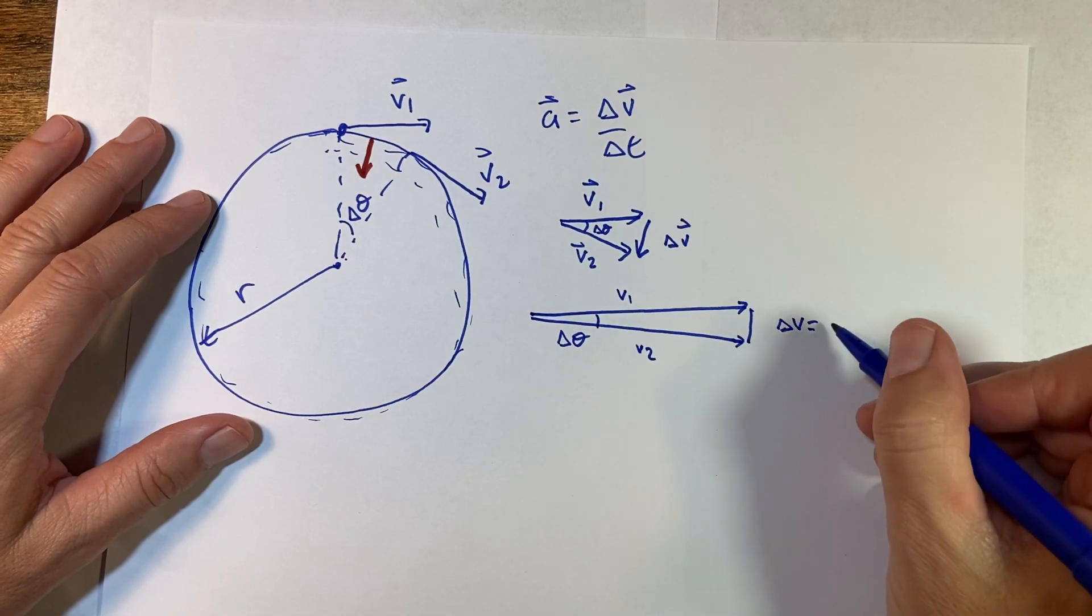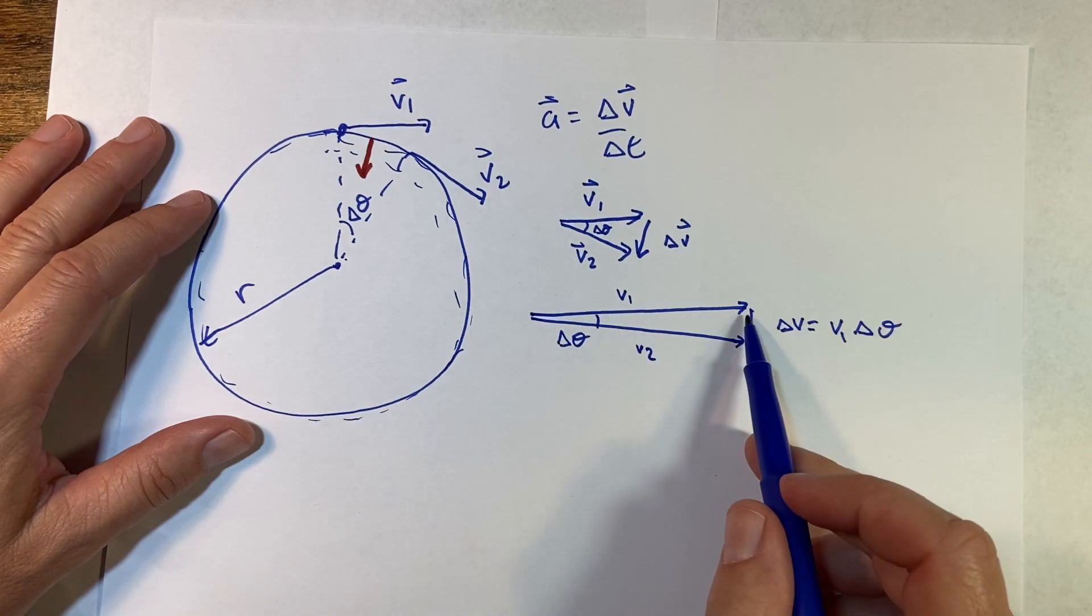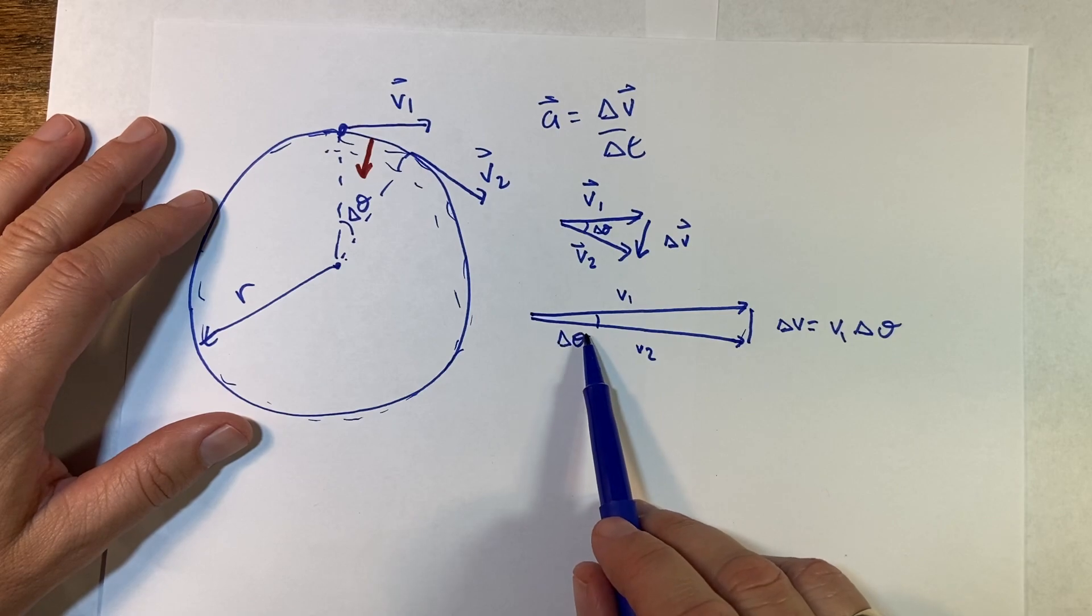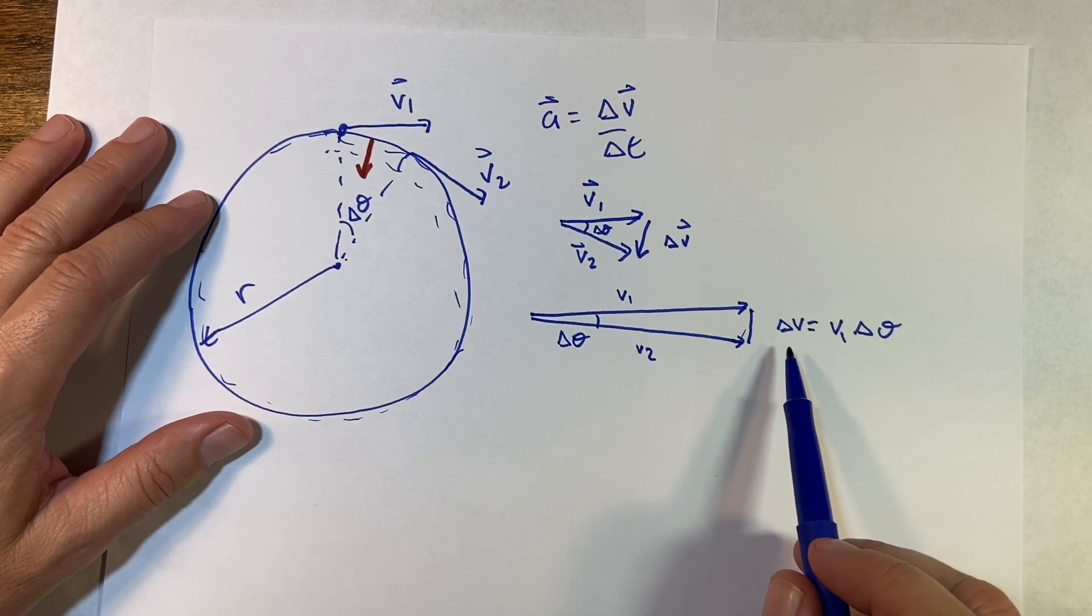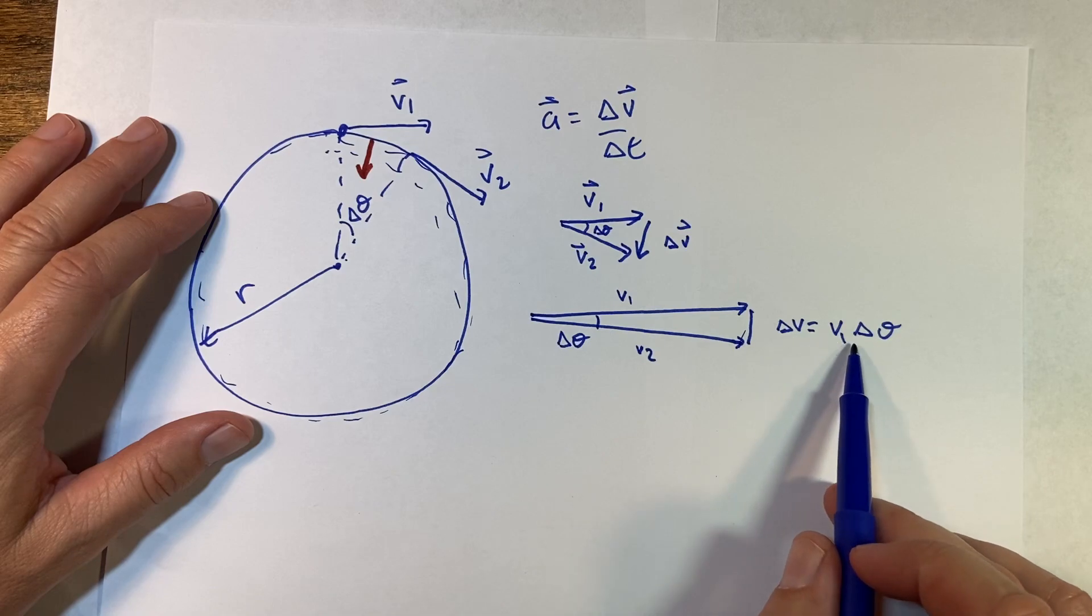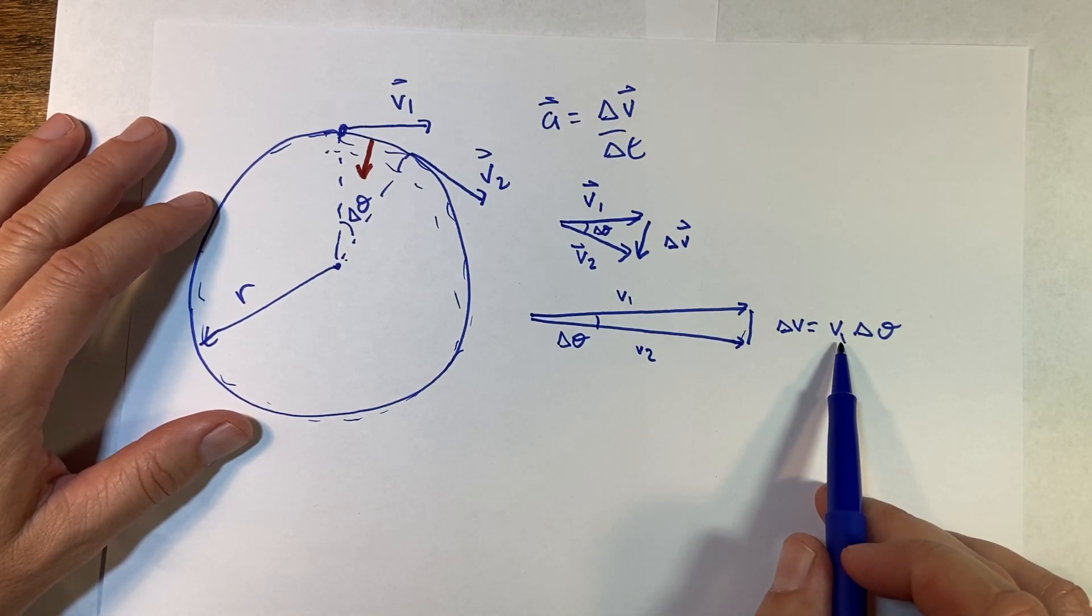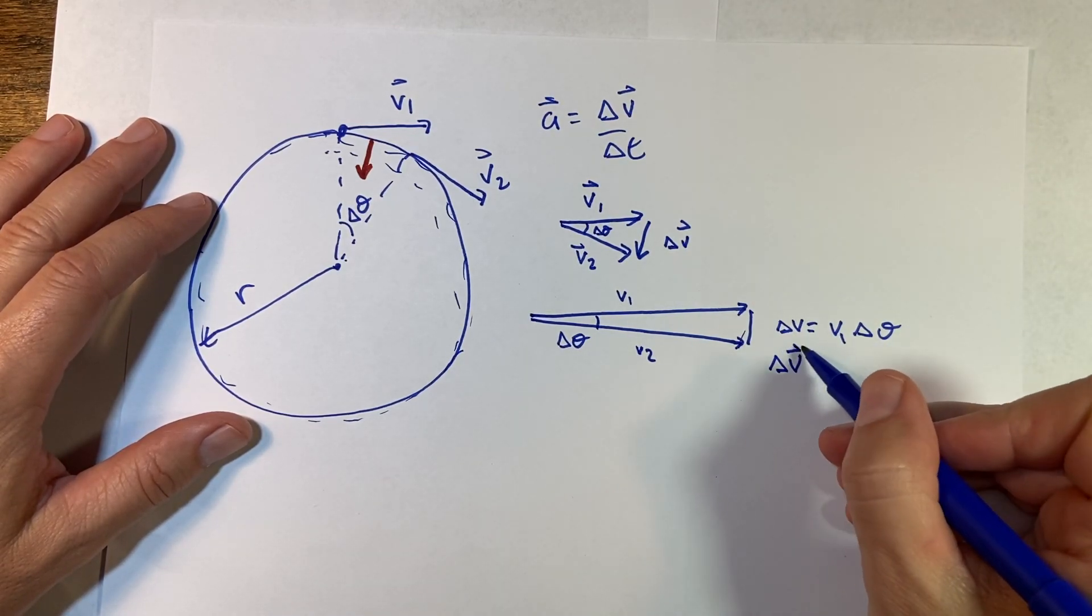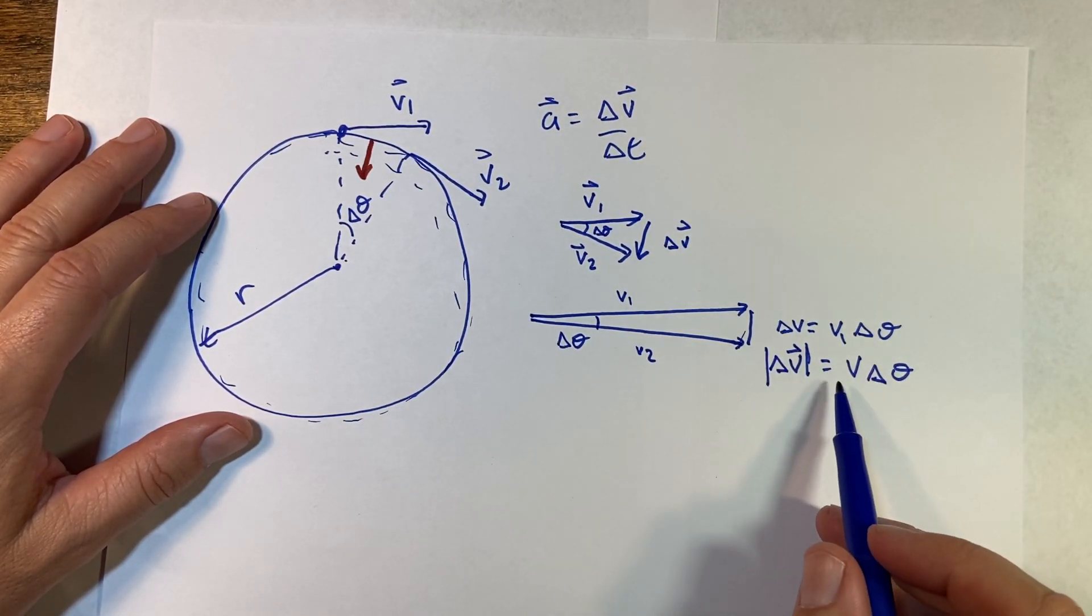Now I can write delta v magnitude as v1 delta theta, because this is like the arc length of that triangle. It's not actually an arc length, but it's pretty darn close. And as delta theta gets smaller and smaller, then this becomes closer and closer to being true. So we're not going to do calculus here, but I just want to show you that's actually where that comes from. So that's my delta v. This is the magnitude of v1, which is the same as magnitude of v2, so I can actually write delta v is v delta theta. So v is just the velocity.